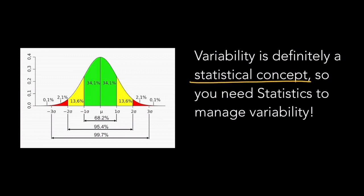You need statistics to manage variability. That is why you cannot improve a process, you cannot improve a product, you cannot improve anything from a manufacturing point of view if you do not use statistics. What you are fighting against is variability, which is absolutely a statistical concept. If you do not use statistics to fight statistics, how can you win the fight? Statistics is absolutely the only weapon you have against the worst enemy that manufacturing has — and that is variability.